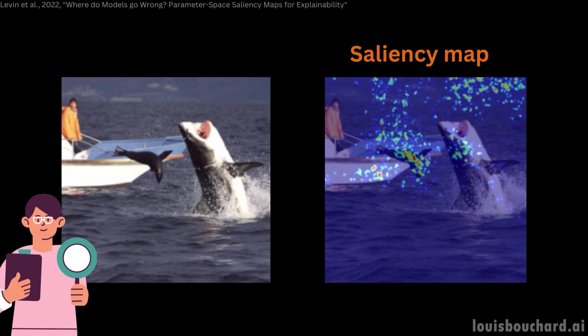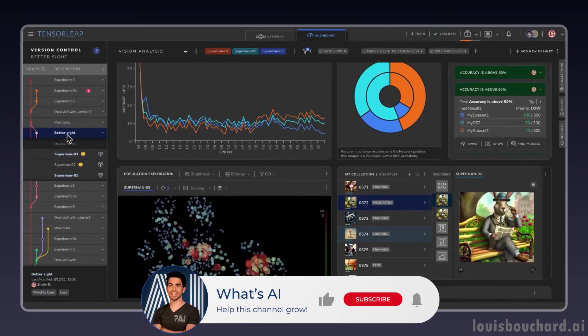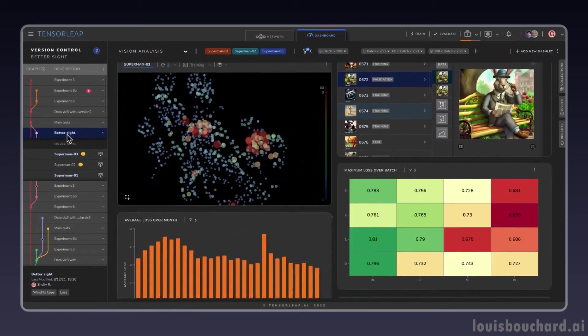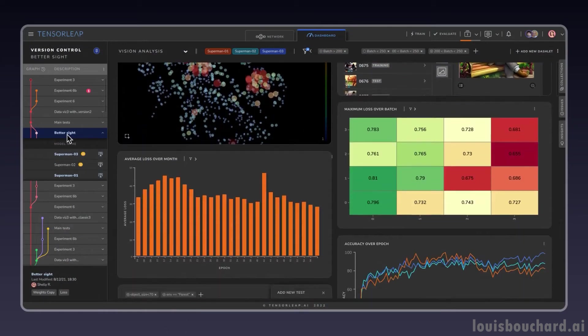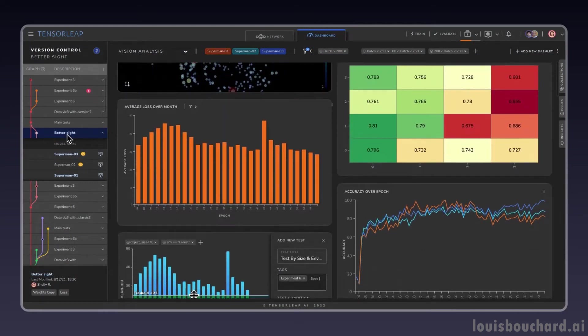We already saw one of such approaches used with models dealing with images, saliency maps. But there are many other approaches allowing you to better understand your model's decisions, even if it's dealing with complicated data that aren't images of dogs and cats, which I'd love to dive in in future videos if that's interesting to you. Please let me know in the comments.